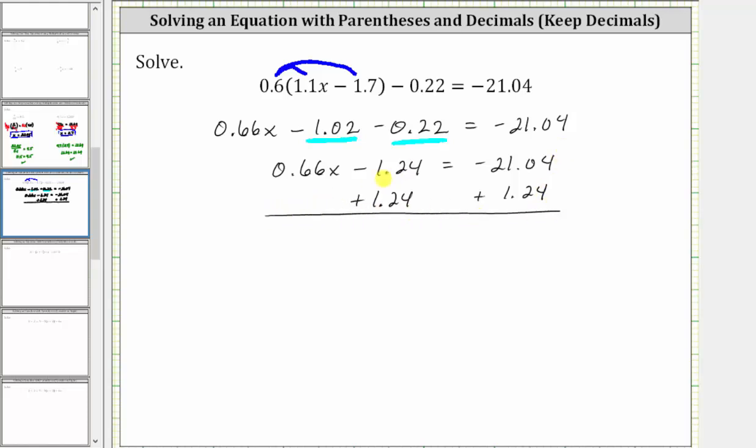Simplifying, on the left, negative 1.24 plus 1.24 is zero, which is why we added 1.24 to both sides. The left side simplifies to 0.66x equals, on the right side, negative 21.04 plus 1.24 is equal to negative 19.8.